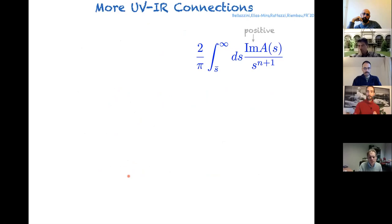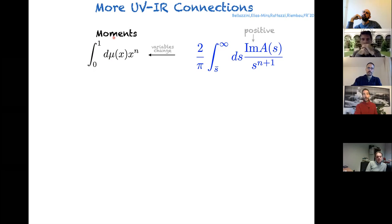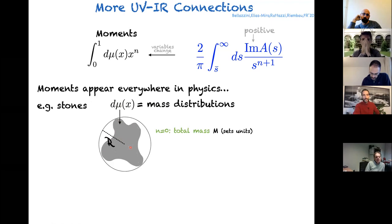With a simple change of variables, ARCs can be written as an integral from zero to one of x^n times a positive measure dμ. These objects are called moments — we're familiar with electric dipole moments and moments of inertia. For example, for an asteroid, dμ is just the mass distribution. n=0 gives the total mass M; n=1 gives the center of mass, always less than r·M; n=2 gives the moment of inertia, always less than r²·M. So we already see these quantities are bounded because we have three moments expressed in terms of just two quantities: the radius r and mass M.